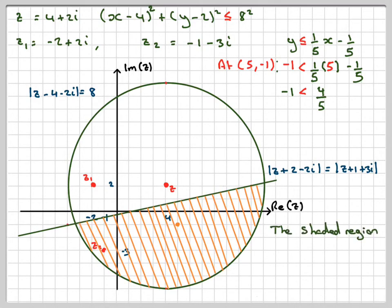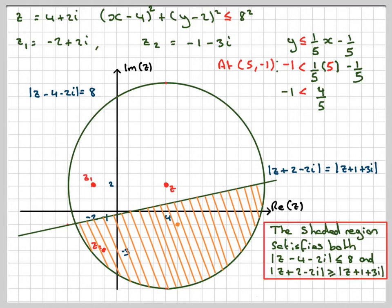So the shading region is now represented by both inequalities: |z - 4 - 2i| ≤ 8 and |z + 2 - 2i| ≥ |z + 1 + 3i|. A little bit quick there, but we have a GeoGebra app for you, and the link will be in the notes of this video.